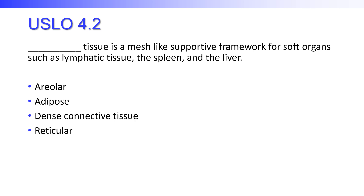This tissue is a mesh-like supportive framework for soft organs such as lymphatic tissue, specifically lymph nodes, the spleen, and the liver. Is it areolar, adipose, dense, or reticular connective tissue? Reticular connective tissue creates that supportive scaffolding — that soft skeleton — for organs like lymph nodes, liver, and spleen.